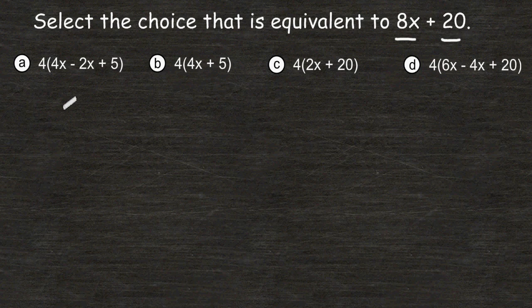Let's start with choice A and see what we can do. If you look inside the parentheses for choice A, we have three terms and two of those are like terms. So let's start by combining those like terms.